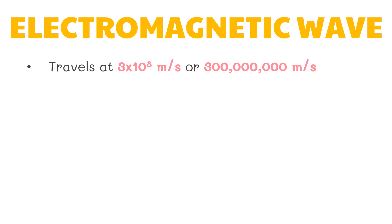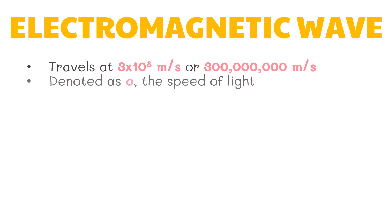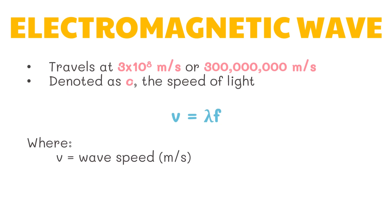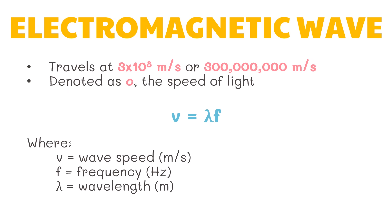All electromagnetic waves can travel through a medium, but unlike other types of waves, they can also travel in a vacuum or empty space. They travel in a vacuum at a speed of 3 times 10 raised to the 8th power meters per second, or 300 million meters per second, denoted as C, the speed of light. The wave speed, frequency, and wavelength are related by the equation V equals lambda times f, where V is the wave speed in meters per second, f is the frequency in hertz, and lambda is the wavelength in meters.